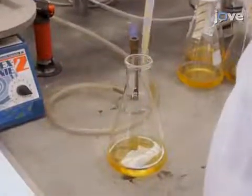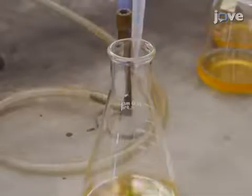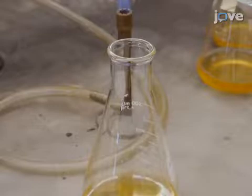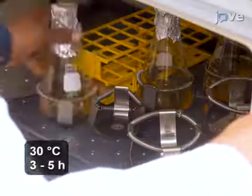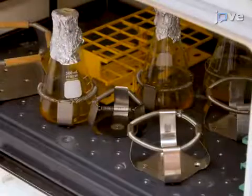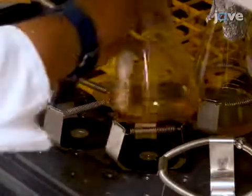Inoculate 100 mL of YPDA medium with 2 mL of the overnight culture. Grow this fresh culture at 30 degrees Celsius until the optical density at 600 nm reaches 0.4 to 0.8.